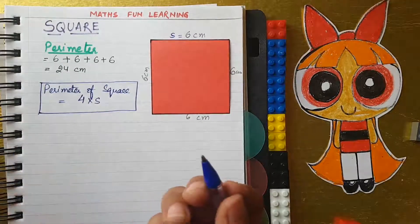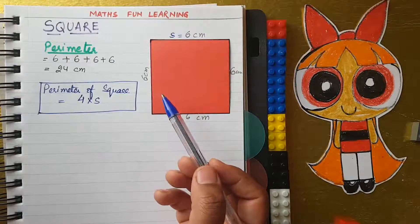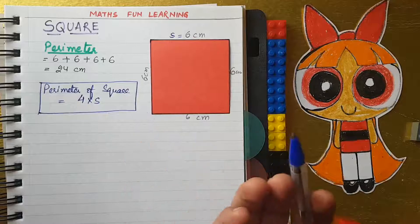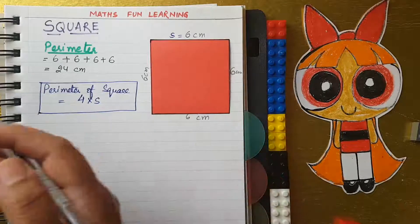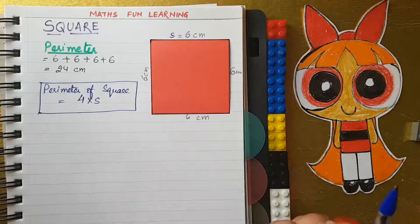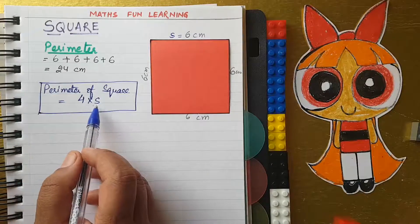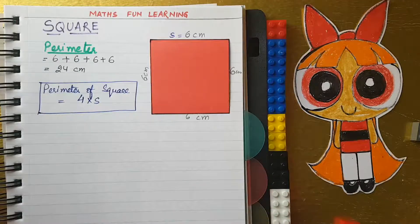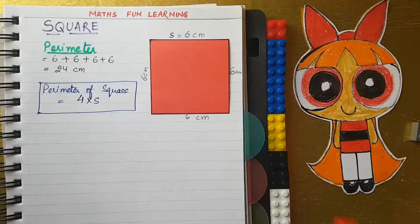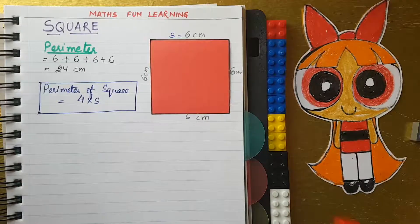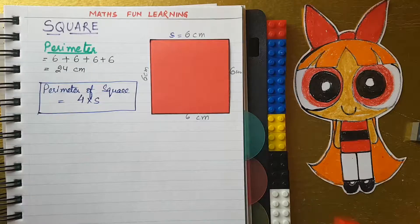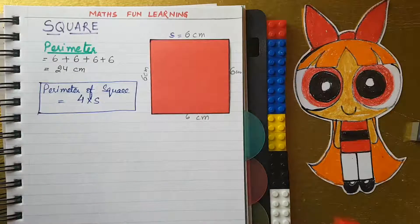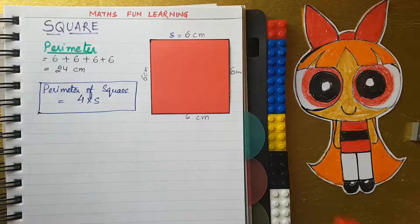This is the perimeter formula, 4 times side. Whatever the side is, there are different sizes of squares. So here 4 times side, you will get your answer. Isn't it easy? Now let's understand the area also.